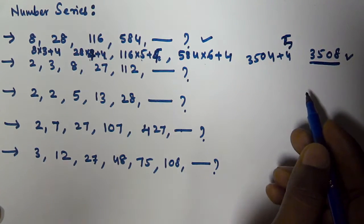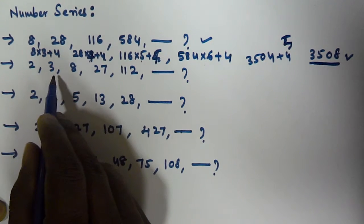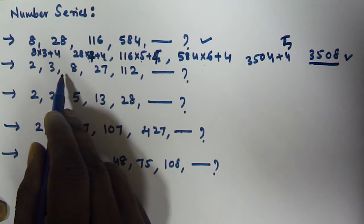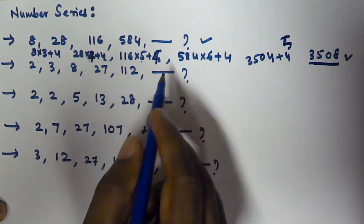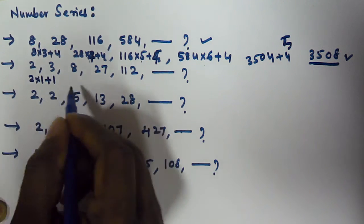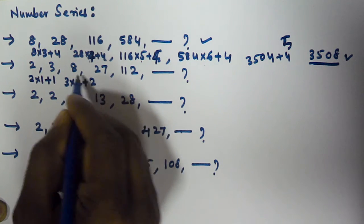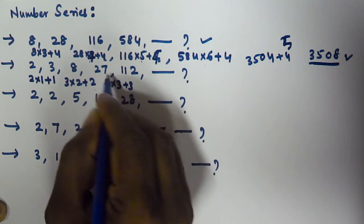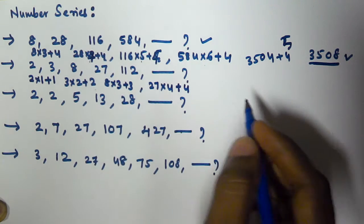The second series is 2, 3, 8, 27, 112. How do we get 3 from 2? 2 times 1 plus 1 equals 3. Then 3 times 2 plus 2 equals 8. Then 8 times 3 plus 3: 8 times 3 is 24, plus 3 is 27. So the pattern is: multiply by n and add n.